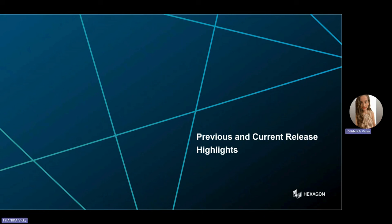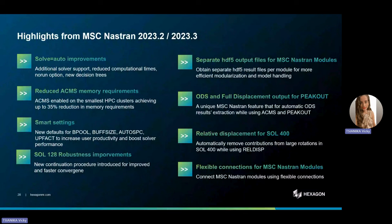This slide highlights key improvements from our previous releases, including reduced memory requirements for ACMS. There is also a range of user capabilities to explore, including safe displacement output, providing NVH analysts the ability to extract all the operational deflection shape responses effortlessly without the need for dummy sub-cases or extra steps. For complete automation, we can identify response peaks using pick-out in MSC Nastran and then seamlessly extract ODSs with ACMS, solidifying MSC Nastran's position in the market.